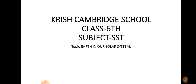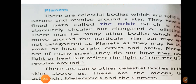Come to page number 78. We will be starting our class now. If we talk about the planets, stars have their own heat and light, but if we talk about planets, they don't have their own heat and light. Planets are celestial bodies which are solid in nature and revolve around a star. They have a fixed path called the orbit.